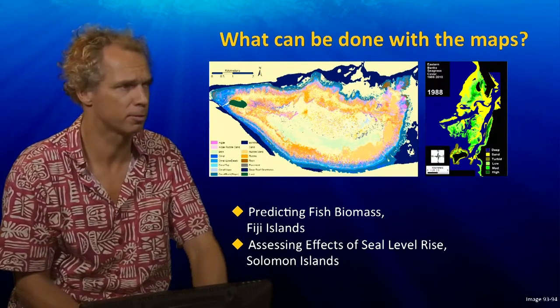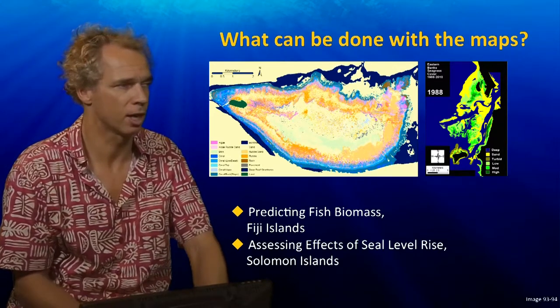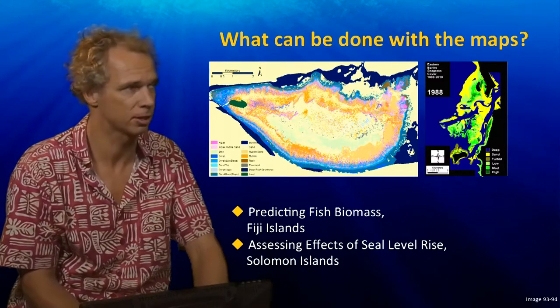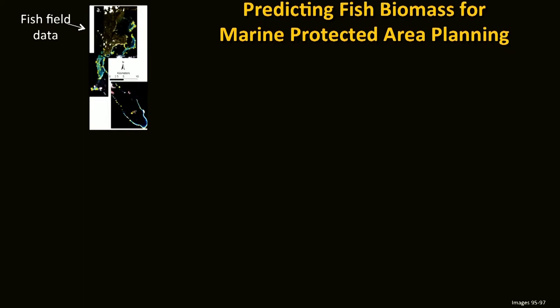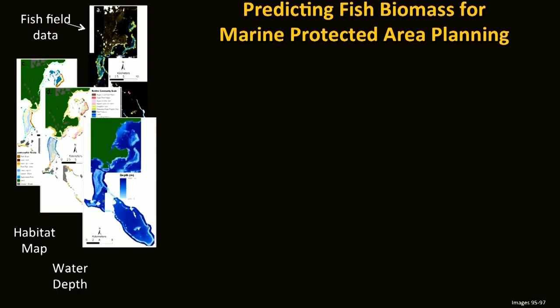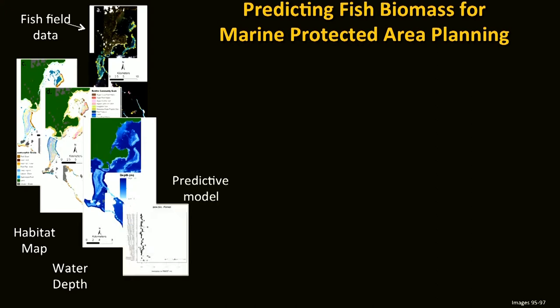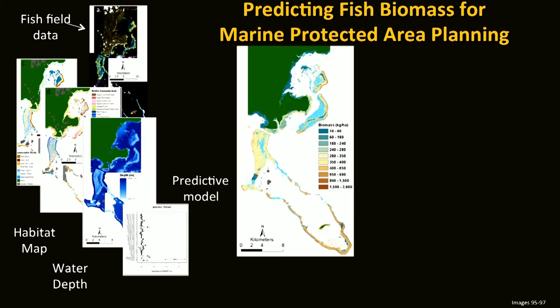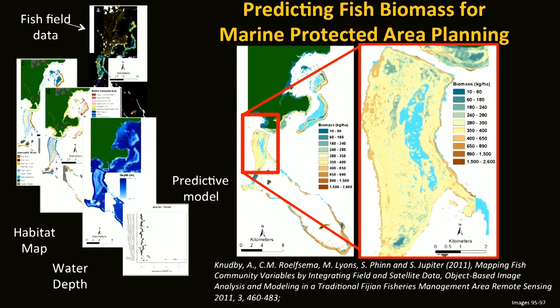For instance, we did work in Fiji where we looked at predicting fish biomass, and in the Solomon Islands assessing impacts of sea level rise. To determine marine protected areas there is a need for knowledge about the composition of the reef but also about where fish is and how much fish there is. In this project we used fish field data in combination with habitat maps and water depth maps — both derived from satellite imagery — and a predictive model to create biomass maps of fish. These maps provide a high level of detail to see where high fish biomass is expected and can be used as input for marine park planning.